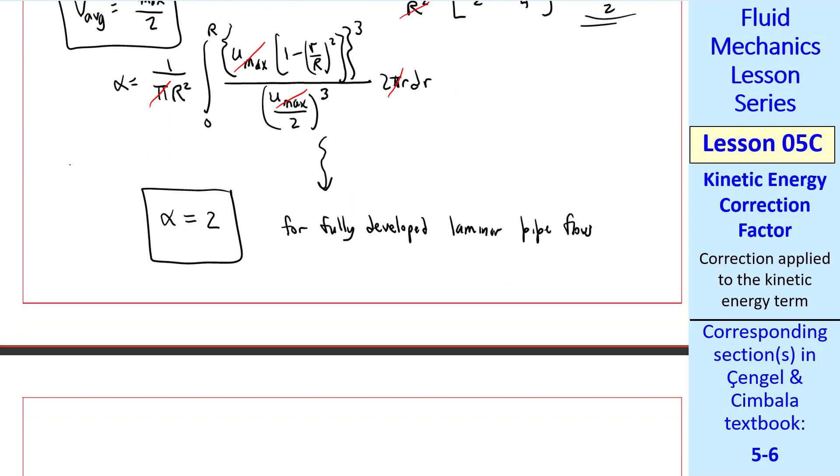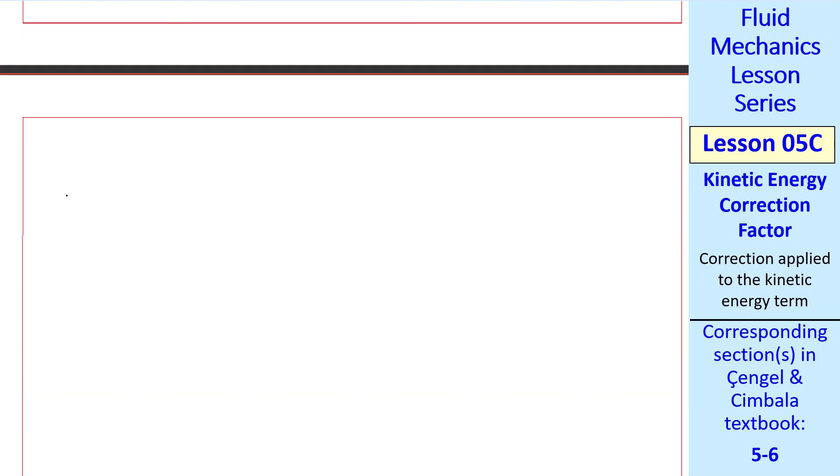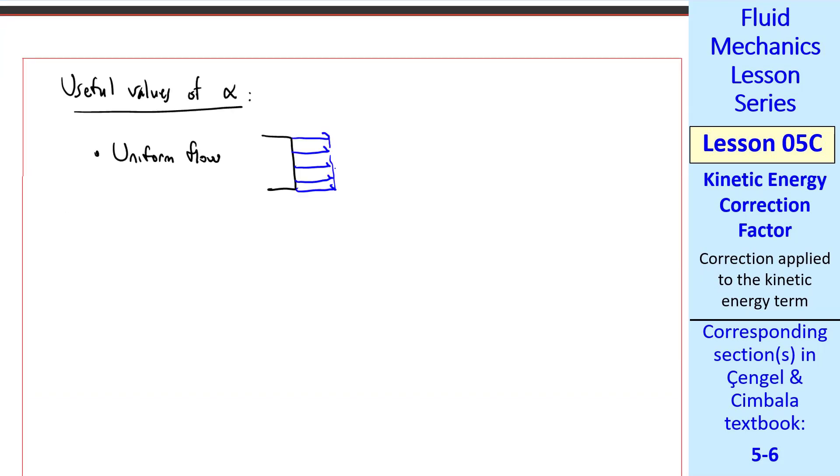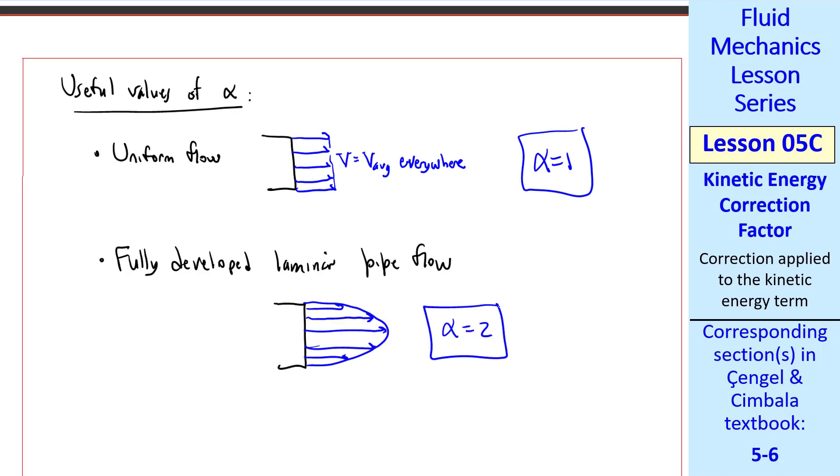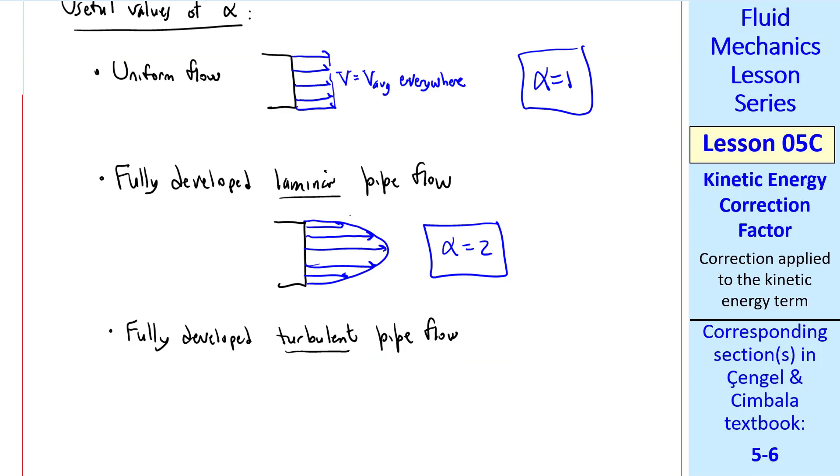Let me now give you some useful values of α for problems which we'll do in this course. For uniform flow, which is almost never the case in real life, α equals 1. For fully developed laminar pipe flow, which is the problem we just did, it turns out that α equals 2.